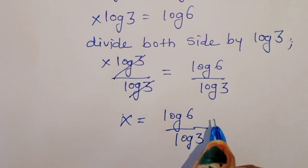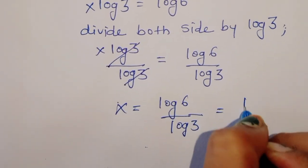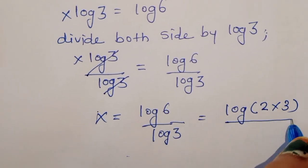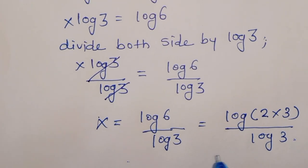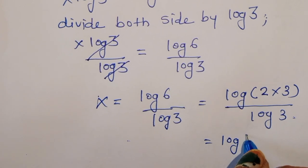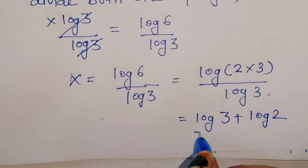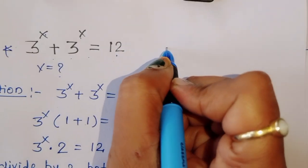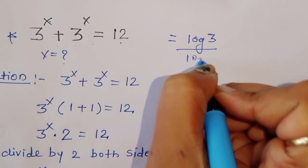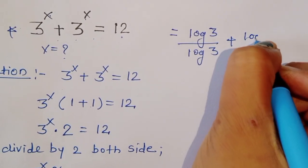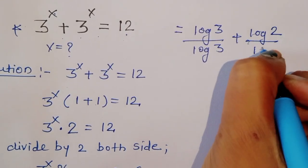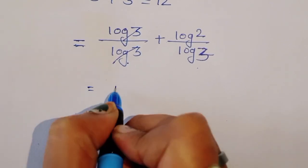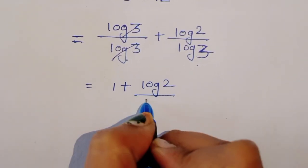Now we can expand log of 6 as log of 2 times 3, which gives log of 3 plus log of 2, all divided by log of 3. Separating the terms: log of 3 divided by log of 3, plus log of 2 divided by log of 3. The first term cancels to give 1 plus log of 2 divided by log of 3.